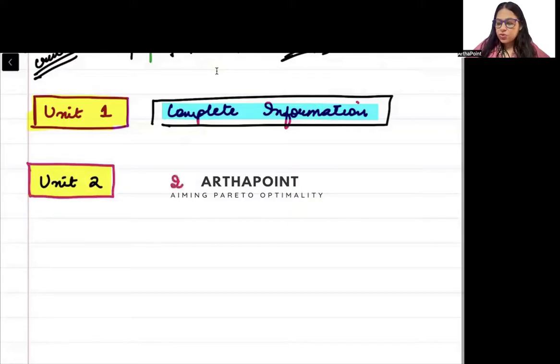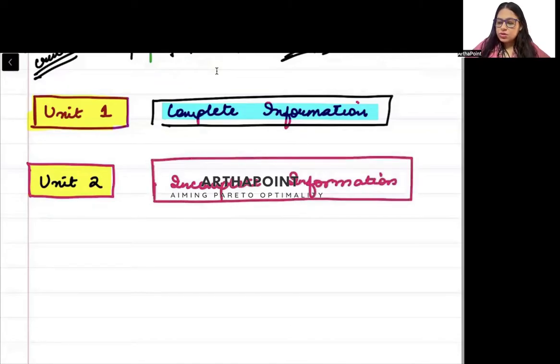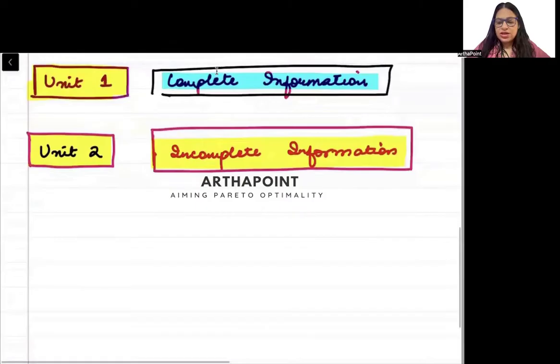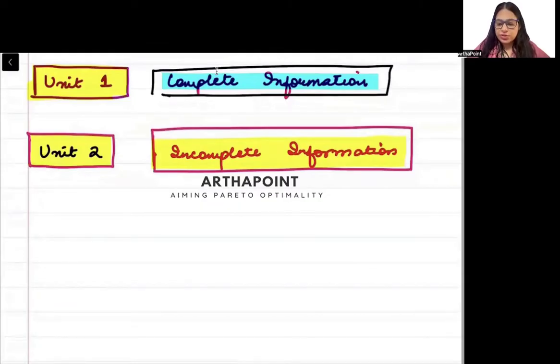The second one that we are going to go ahead and we are going to do is called incomplete information. Under incomplete information, what we do is there is some kind of information which is missing. When I buy an insurance, the insurance company does not know what disease I have. I may hide it from the insurance company. Or once I have purchased car insurance, insurance company does not know whether I will drive at high speed. I may just drive very rashly. So there are cases when there is incomplete information, there are cases of moral hazards, of asymmetric information. So this unit we will be going ahead and we will be talking about that.